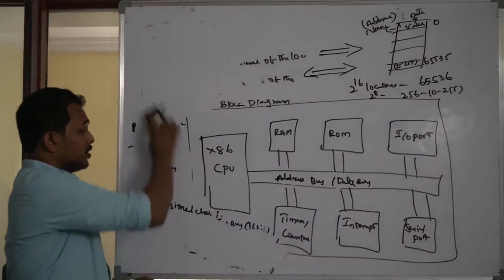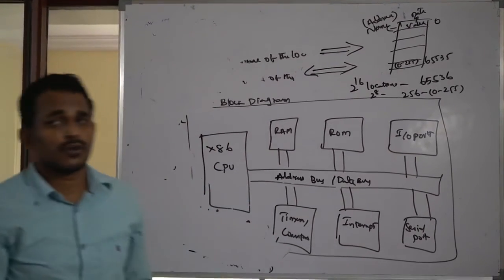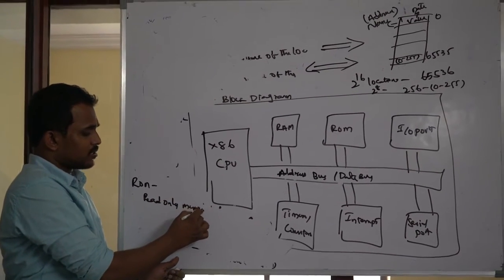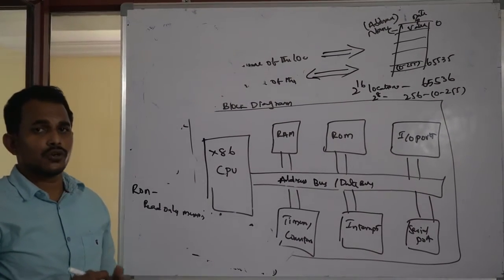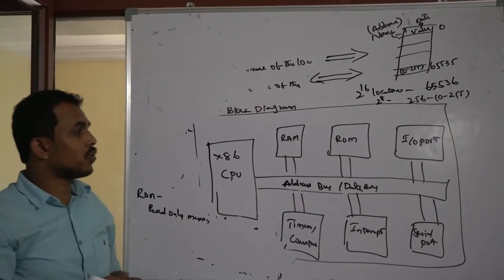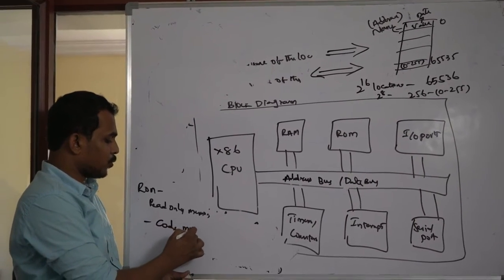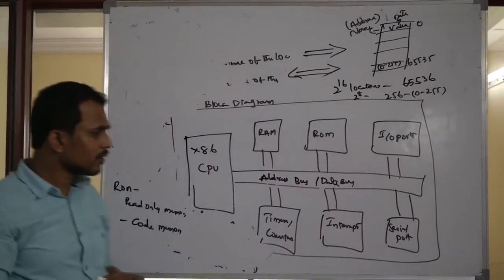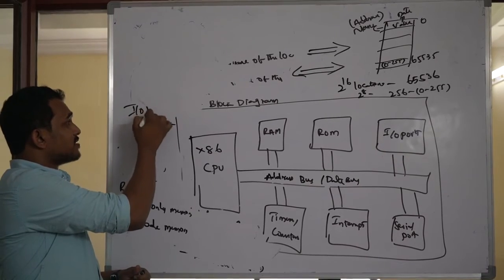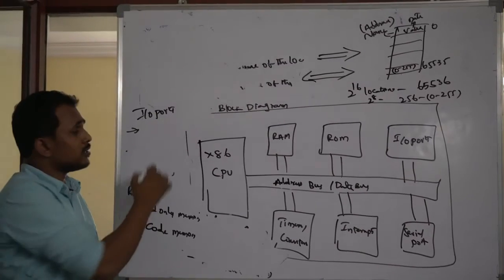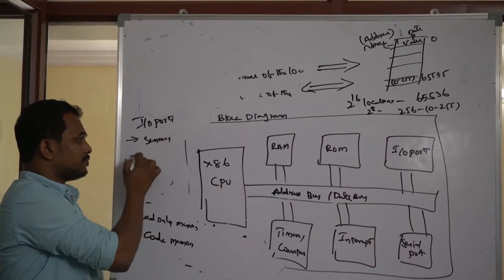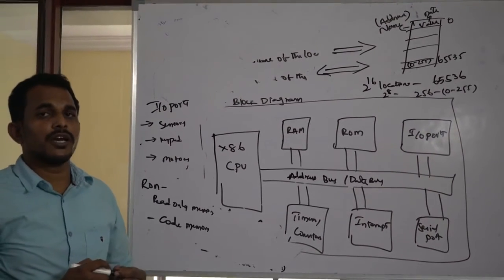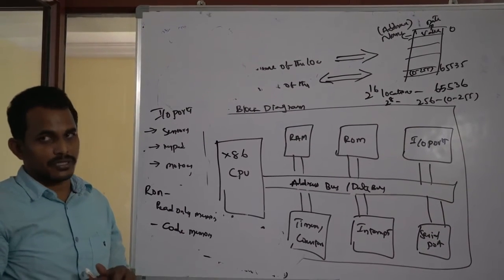Next is ROM — read-only memory. This ROM memory helps us store data permanently. Any information you want to store permanently can use this ROM block. ROM memory is called code memory in microcontrollers, and when you develop any program, it is stored in ROM memory. Next are I/O ports, which are very important for accessing peripherals from your microcontroller. These I/O ports help you access peripherals like sensors, keypads, motors — you can connect anything with the help of I/O ports. Without this feature, it is not possible to connect any peripherals with the controller.